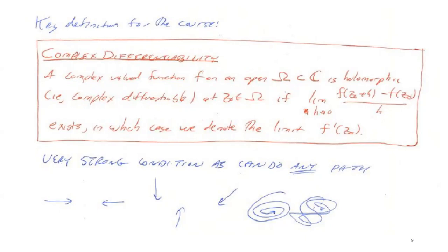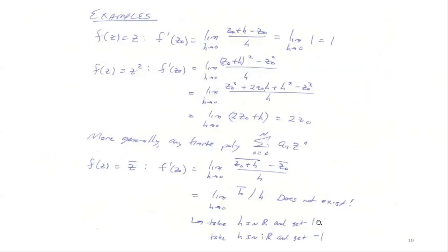The key definition is complex differentiability. As said, it's the limit as h→0 of [f(z₀+h) − f(z₀)]/h, which must exist and be independent of the path. This is an incredibly strong condition — you have to get the same limit approaching along any path, including spirals or scribbles.